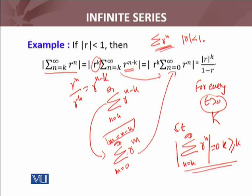So r^k times whether m or n doesn't really matter, it's just a symbol I've named. So I can shift the index of this series to n equals zero to infinity. Now, n equals zero to infinity, r^n, I know this is a convergent series for |r| less than 1.